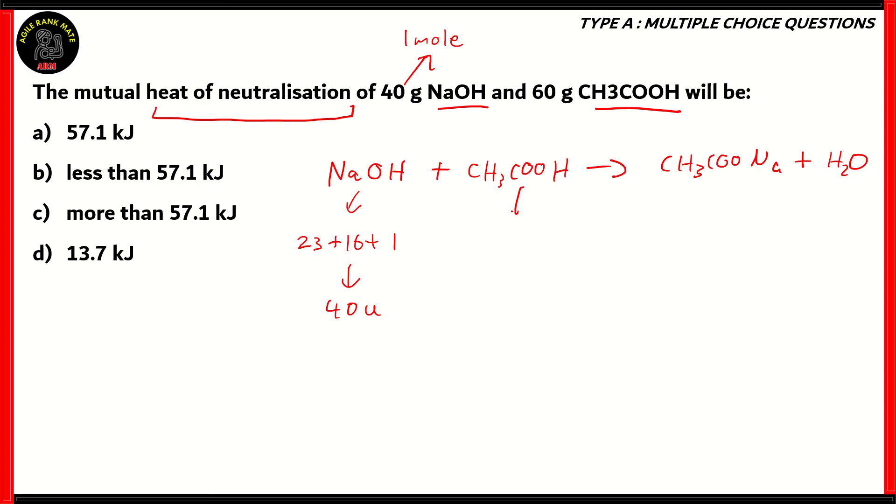What about acetic acid? For acetic acid, we have 2 carbons, so 2 times 12, plus 4 hydrogens, so 4 times 1, and 2 oxygens, so 2 times 16. That's 24 plus 4 plus 32 equals 60. So the molecular weight of vinegar is 60 unified mass units, and since we have 60 grams of acetic acid, that means the number of moles is 1. So we have 1 mole of NaOH and 1 mole of acetic acid.